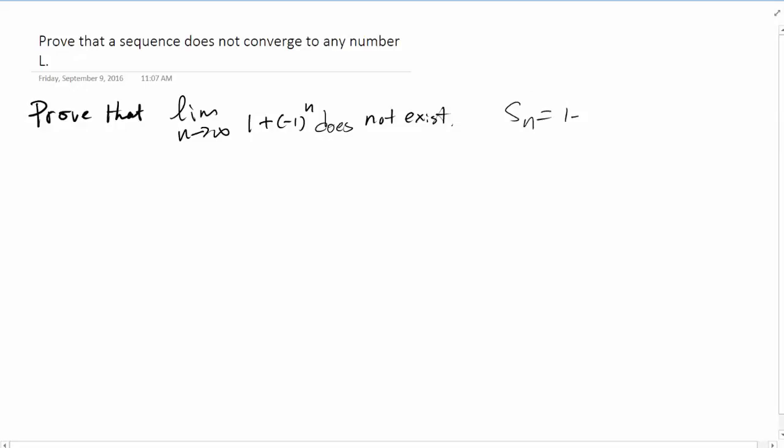is equal to 1 plus (-1)^n. If we write this down, we have S1 = 0, S2 = 2, S3 = 0, and so on. We know it doesn't have a limit.